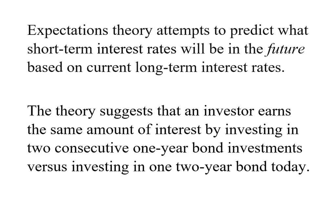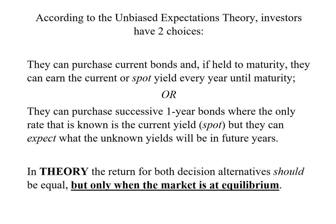What the theory suggests is that if we have two investors — one who invests in two consecutive one-year bonds and one who invests in a single two-year bond — their return on that investment will be equal. So in other words, according to this theory, investors have two choices. They can purchase a current bond and if they hold it to maturity they can earn the current or spot yield every year until maturity.